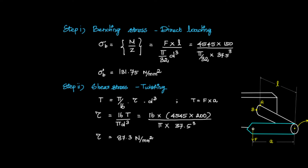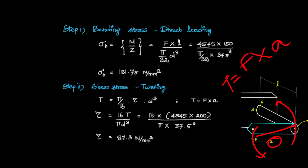For the twisting moment and shear stress: T = (π/16)·τ·d³, and twisting moment T = F × A, where A is the arm length (twisting radius). So τ = 16T / (π·d³) = 16 × (F × A) / (π·d³), with F = 4545 N, A = 200 mm, and d = 37.5 mm. The resulting shear stress is 87.3 N/mm².